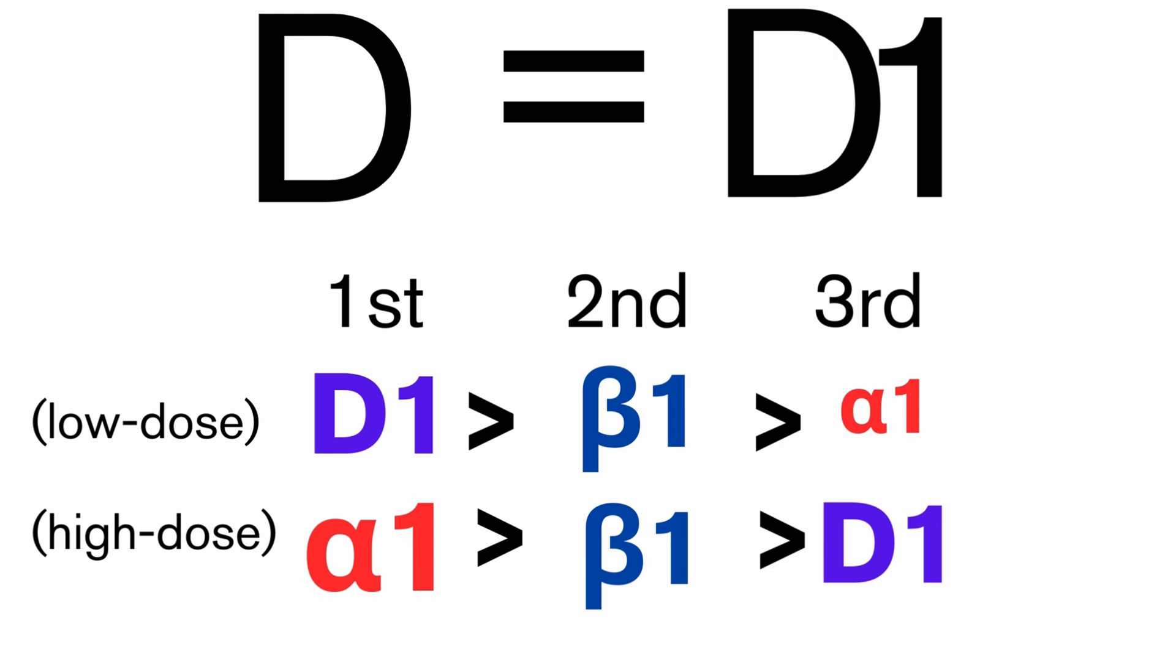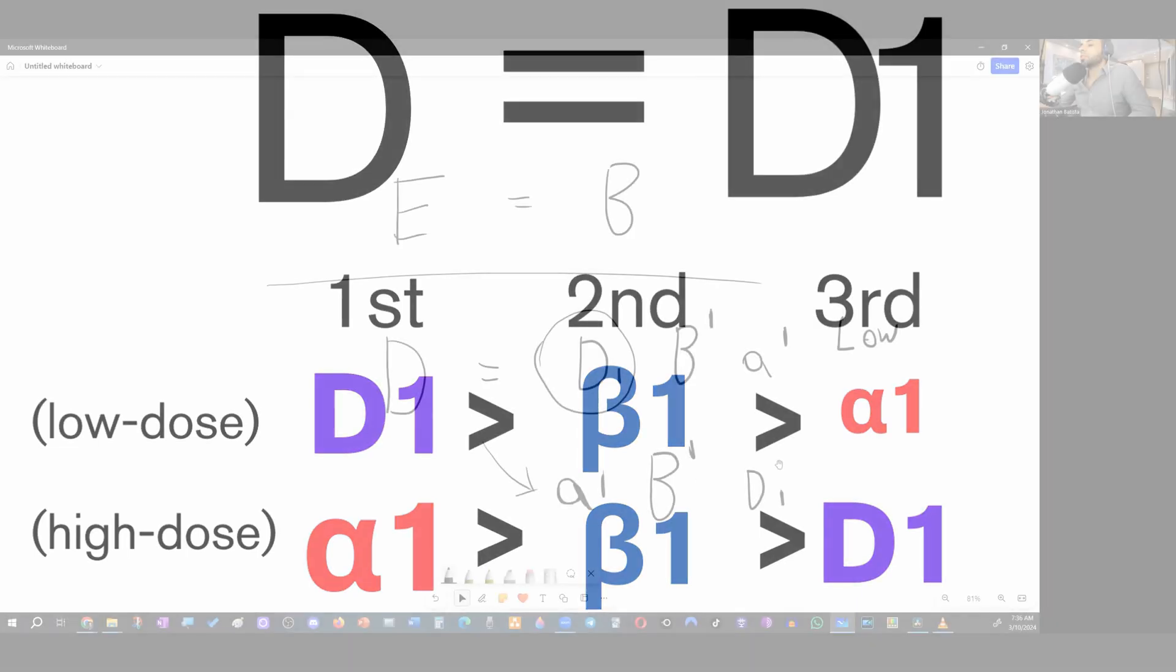So I put it on the beta one side because the secondary affinity will always be beta one. As you can see here, second place will always be beta one. And look how it flips opposite directions. So at a low dose, it has its priority met. It binds dopamine, but at a higher dose, it's backwards. That's the rule of the catecholamines here, alpha, beta, dopamine.